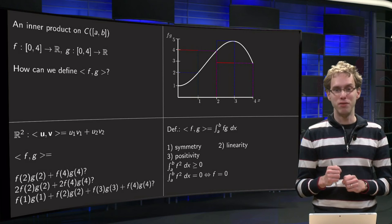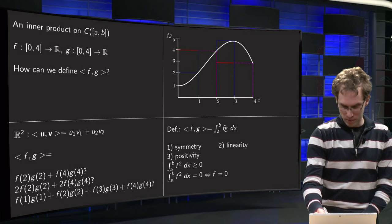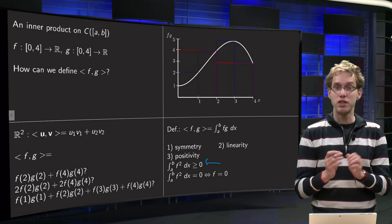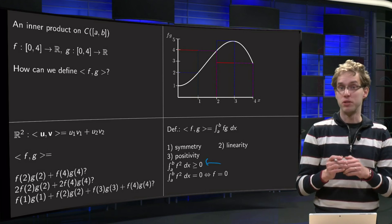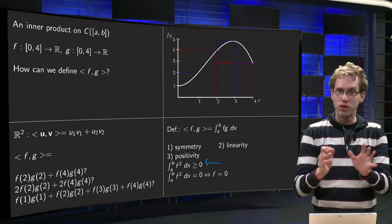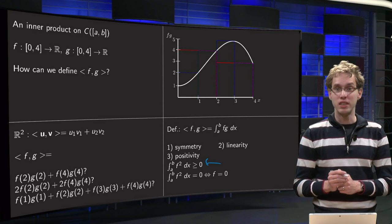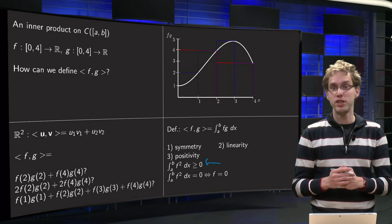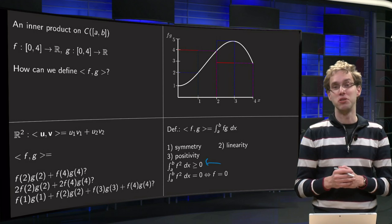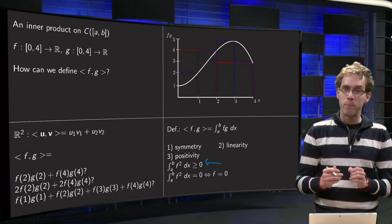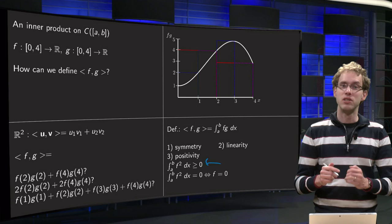Positivity is slightly less trivial. Well, the first one, integral of f squared bigger equal than zero, that one is trivial, because f squared is bigger than zero, and you add stuff, so that's okay. And the integral of f squared dx equals zero, if and only if f is zero, that hinges on the continuity of f, that is slightly less trivial, but also that one is satisfied.